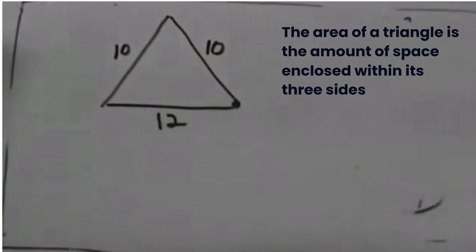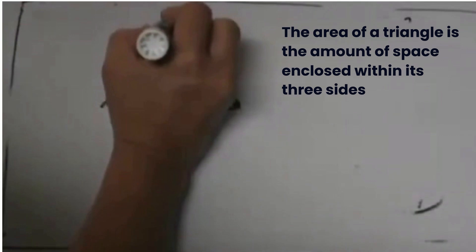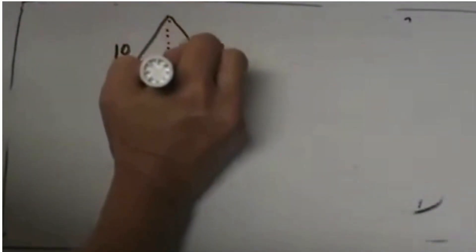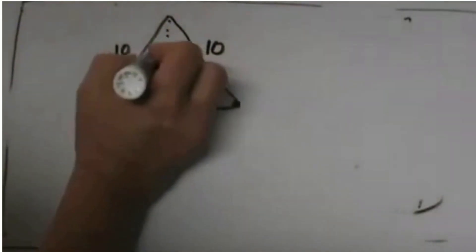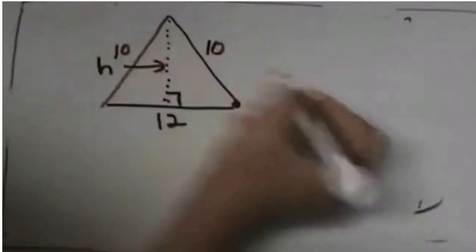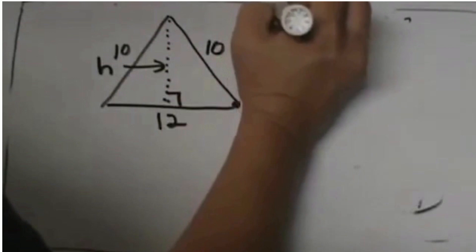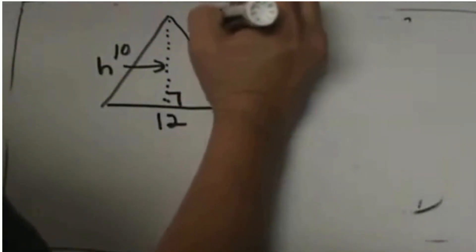Now this is where that altitude stuff comes in. We are going to actually draw an altitude down because that is our height. That altitude is our height. Remember we have to do one half the base times the height to find the area.